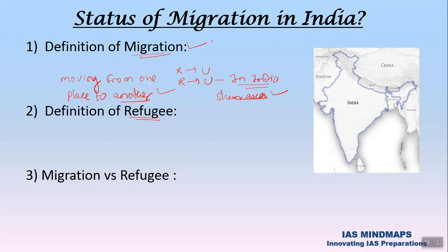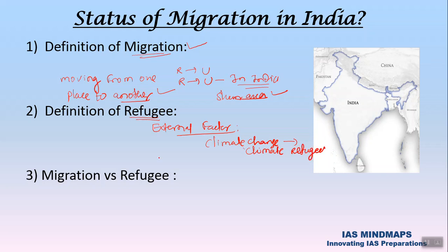Migration is mostly driven by the will of the person who is migrating from one place to another. But in the case of refugees, there are external factors — it can be climate change, giving rise to what is now an emerging problem known as climate refugees. Another factor is government policy, like in the case of Rohingya refugees. The major difference is that the refugee problem is governed by the United Nations Convention on Refugees, and every state that has signed that convention must follow those guidelines. The government does not have much freedom in formulating policies in that regard.